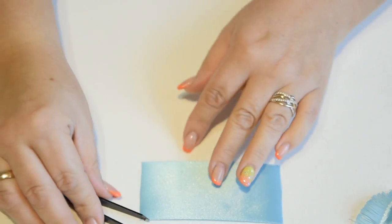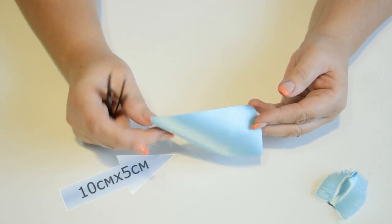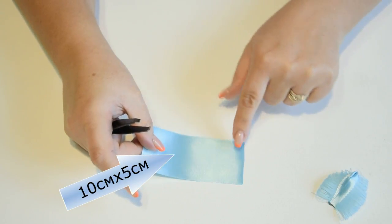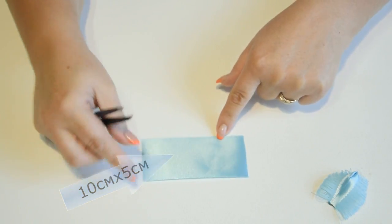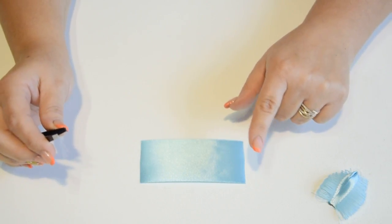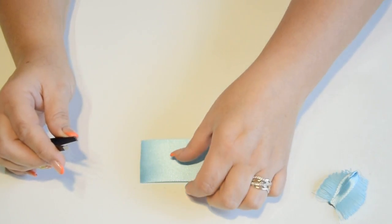To make one detail, we need satin ribbon, a piece 10 cm by 5 cm. We don't treat the edges with fire so it's easier to work with this piece.